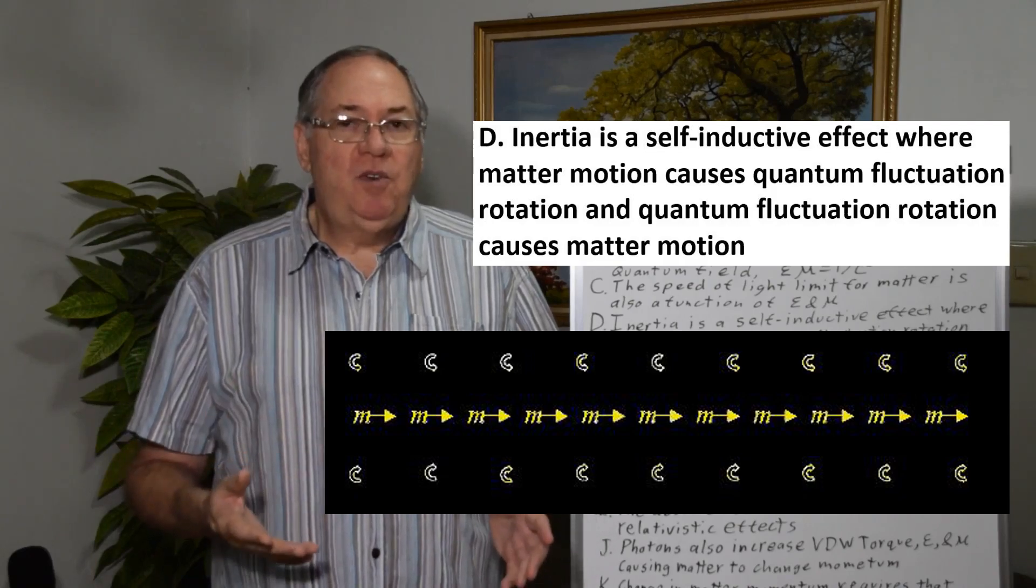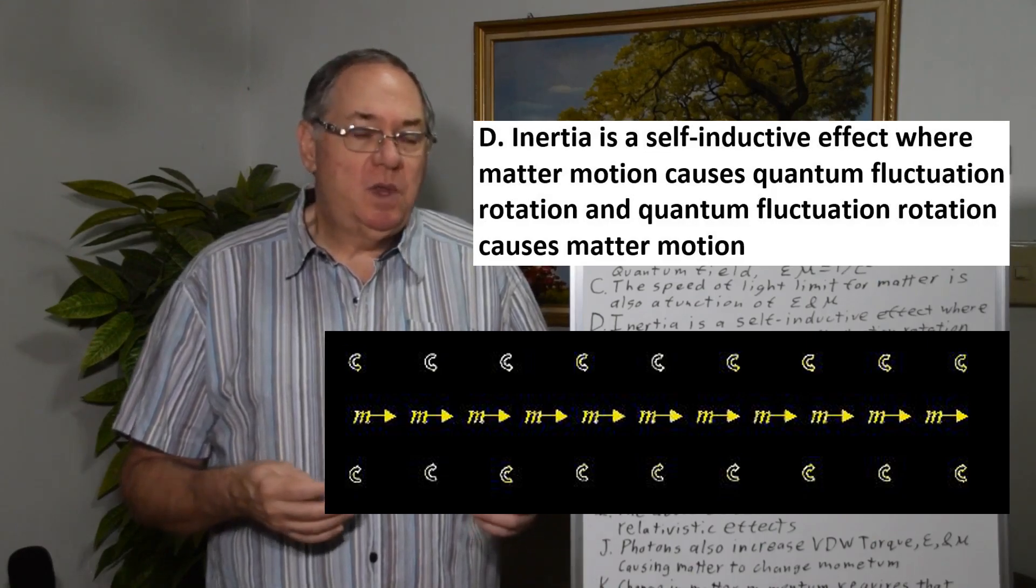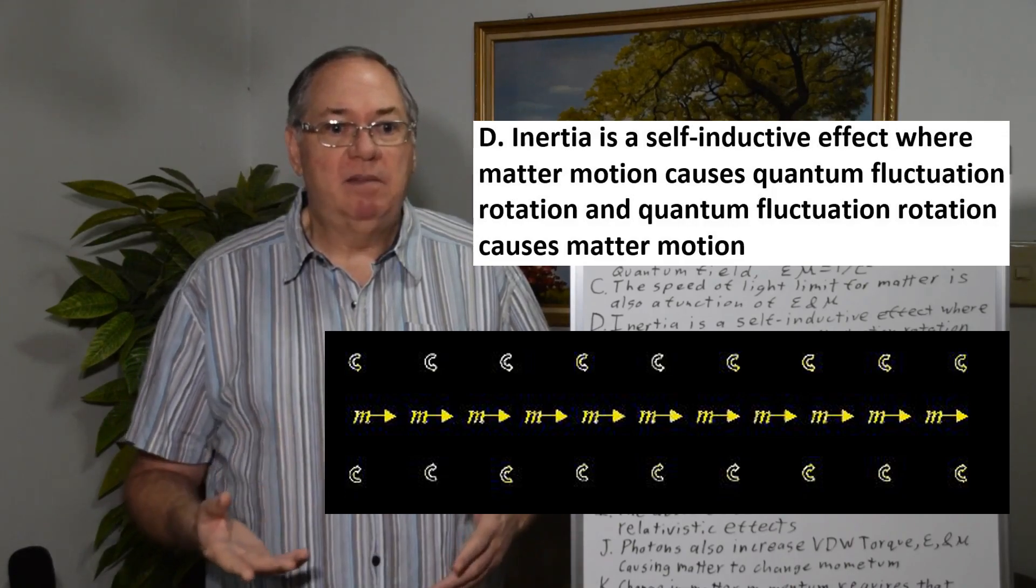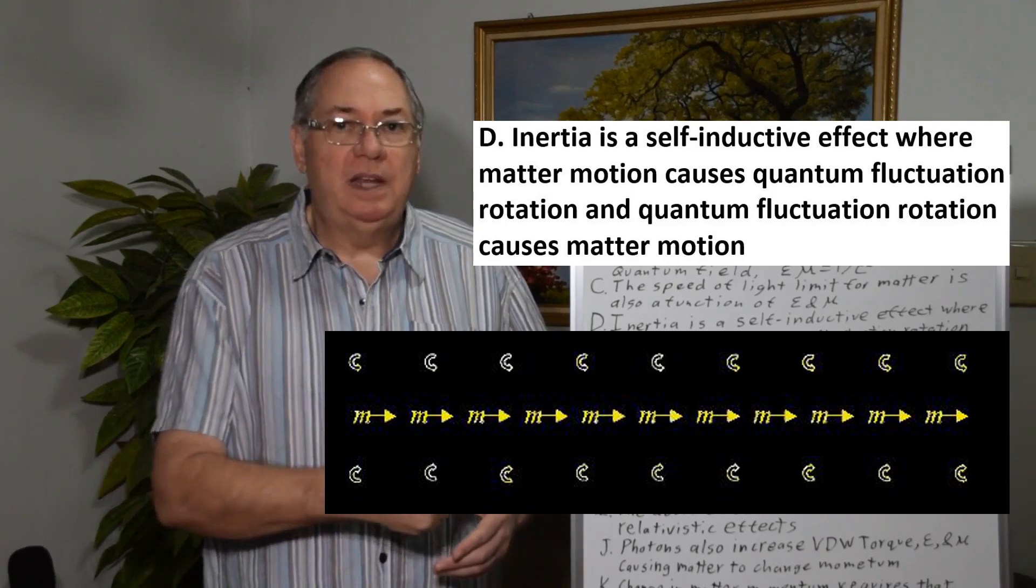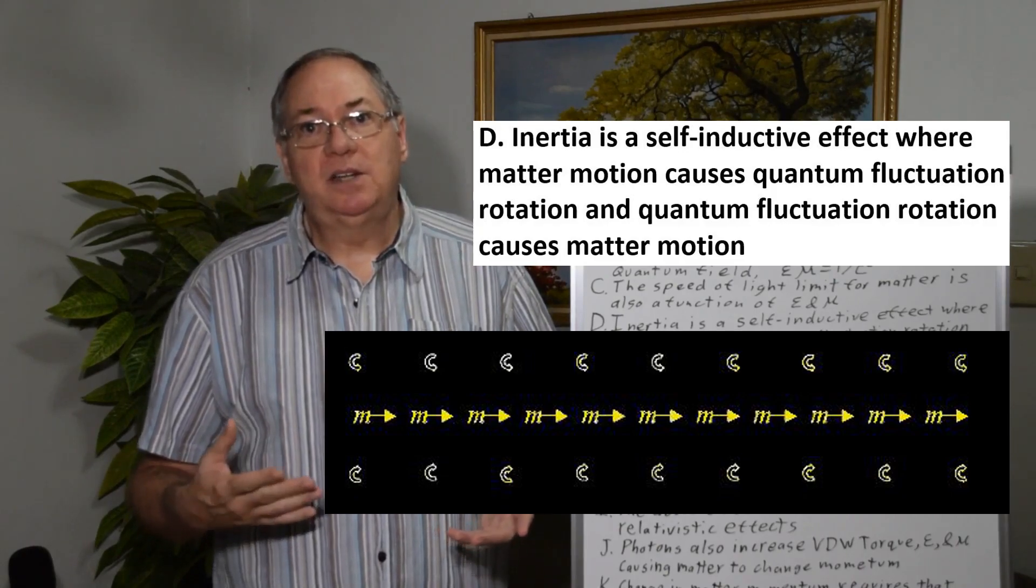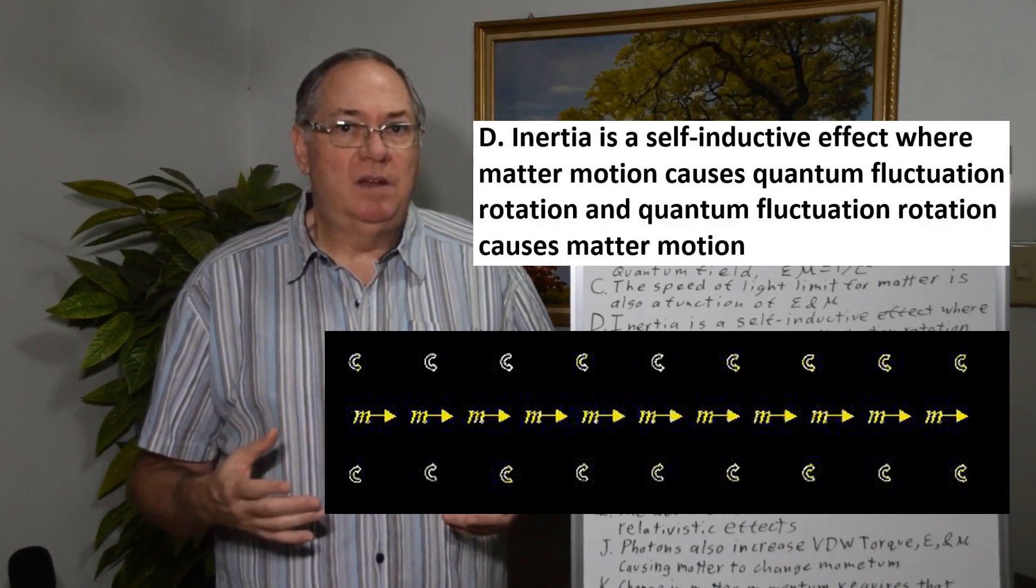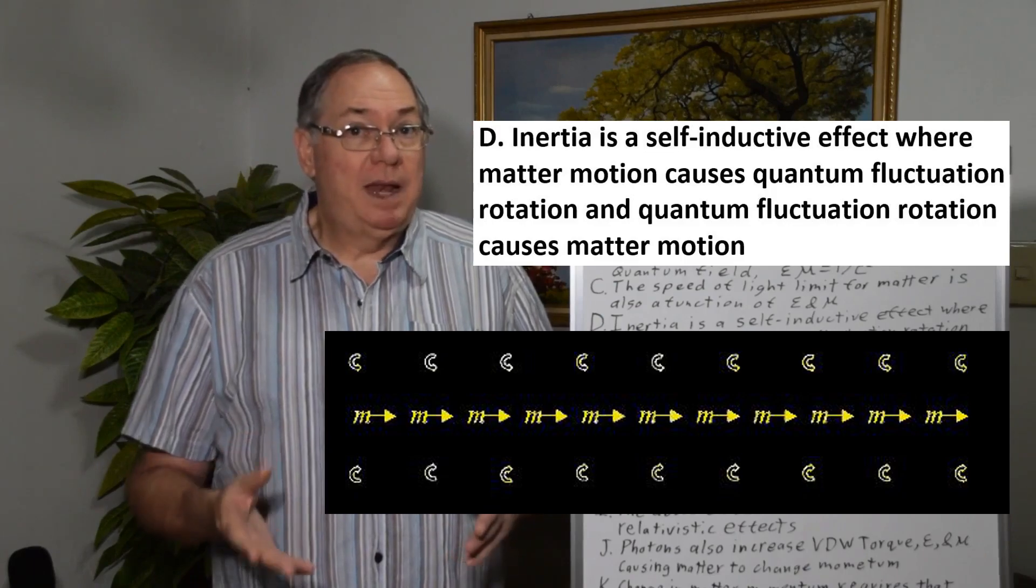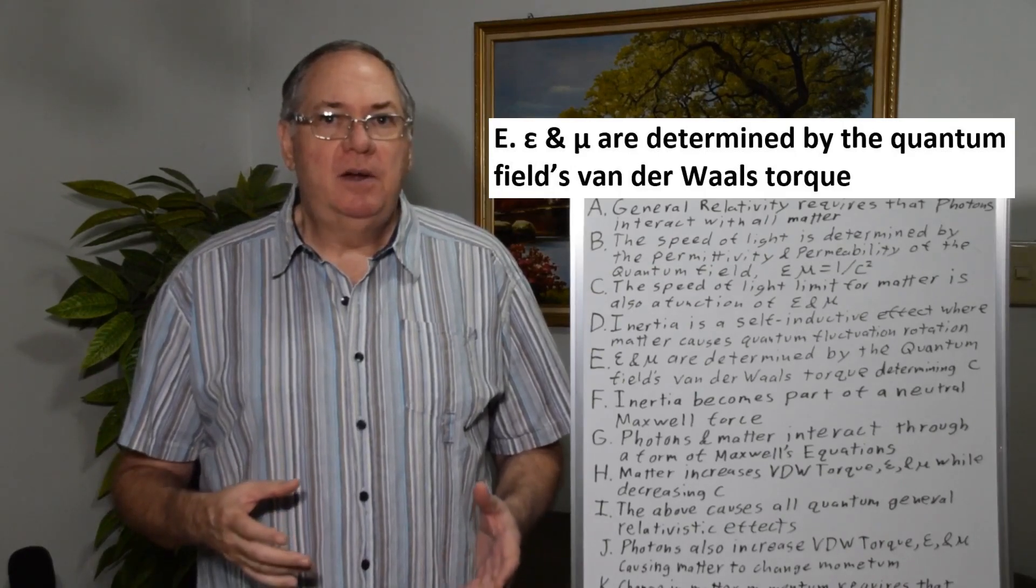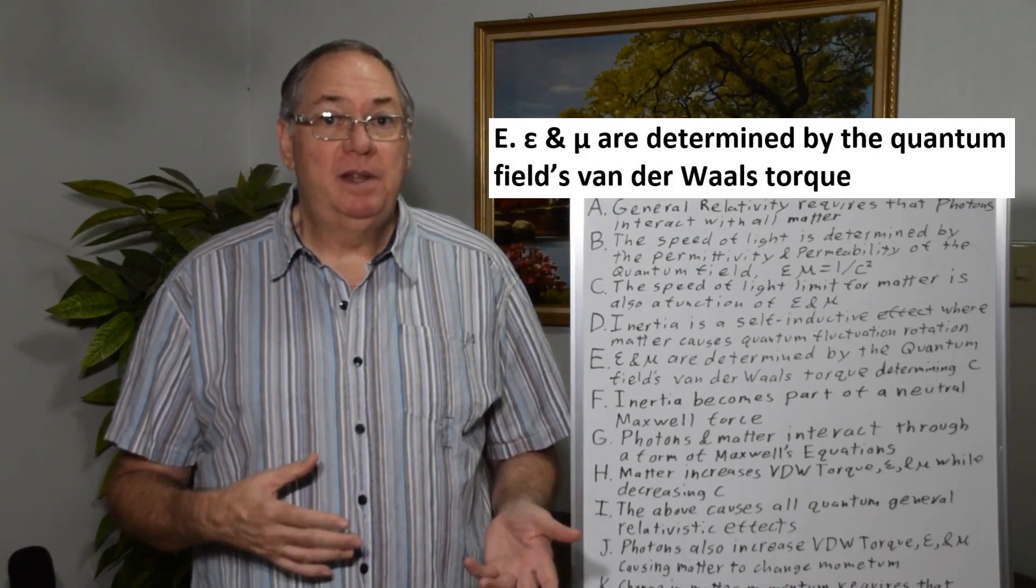Which would only be true if quantum fluctuations are trying to move. So the best way to model inertia that's consistent with quantum field theory and the speed of light limit is if when matter is moving, it causes quantum fluctuations to rotate, and the quantum fluctuation rotation causes matter to move. And so we have a simple form of self-induction that looks a lot like magnetic self-induction, except it's electrically neutral. And we can understand this even better once we understand how the permittivity and permeability arise.